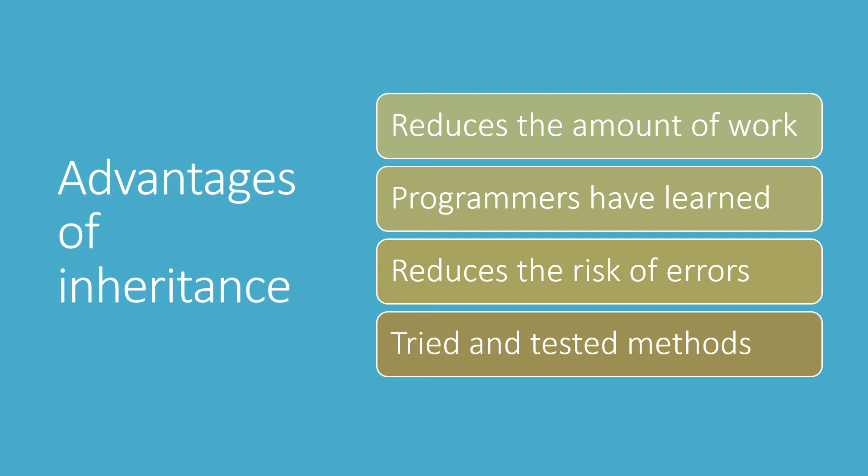Or if there's a change — let's say everybody's standard working week is changed from 40 to 38 hours a week — we only have to make that change once and it would cascade down to all the subclasses. So it's a lot less fiddly than copying and pasting. It's a bit like copying the code from one class to create a new class, but it's simpler and quicker and it saves everybody a lot of bother. For this reason, inheritance is very widely used.